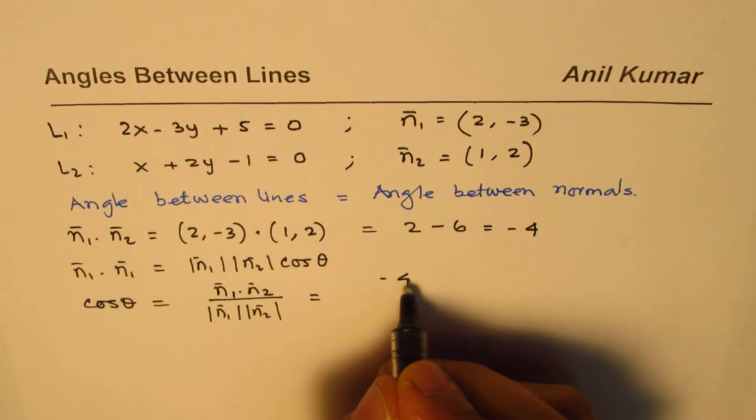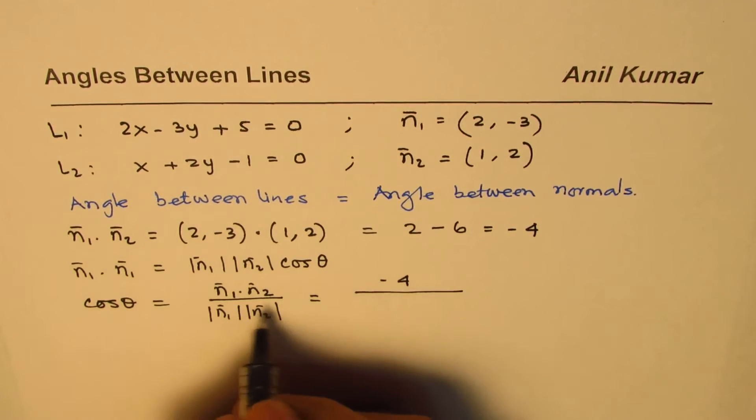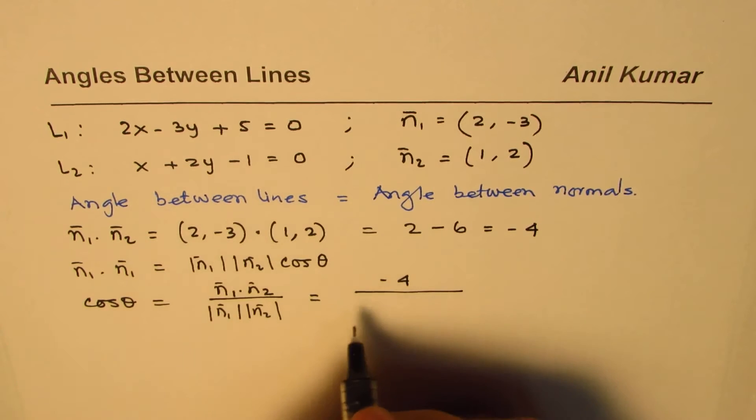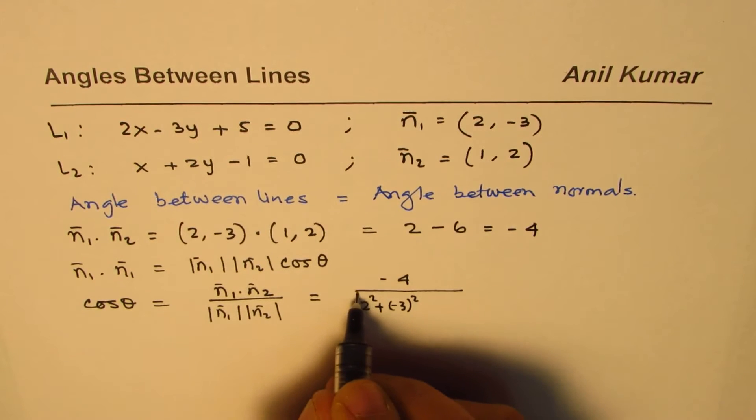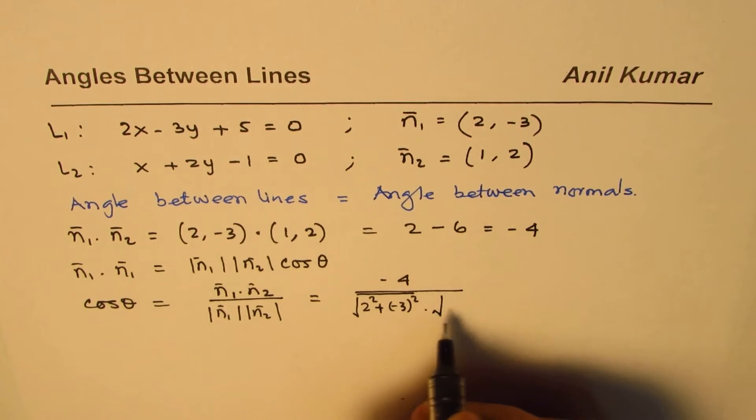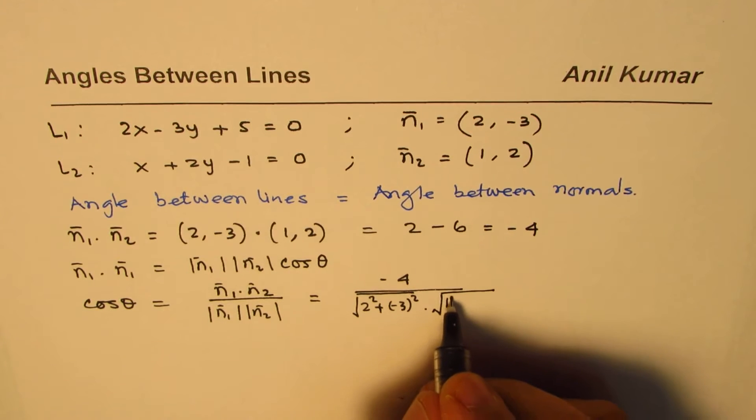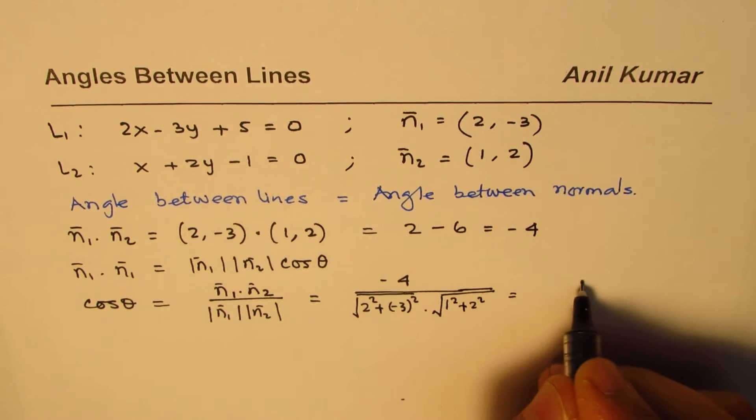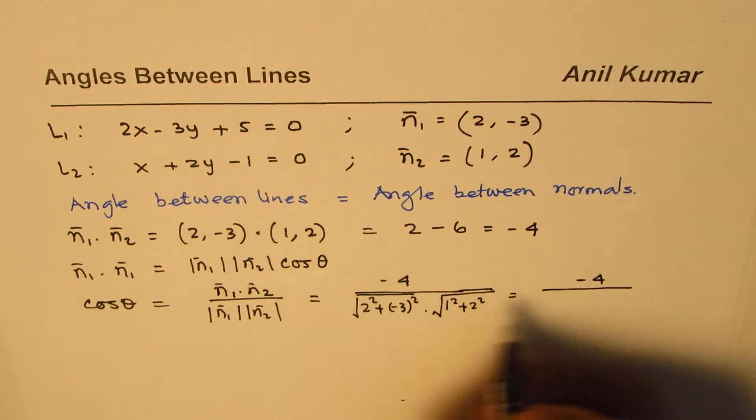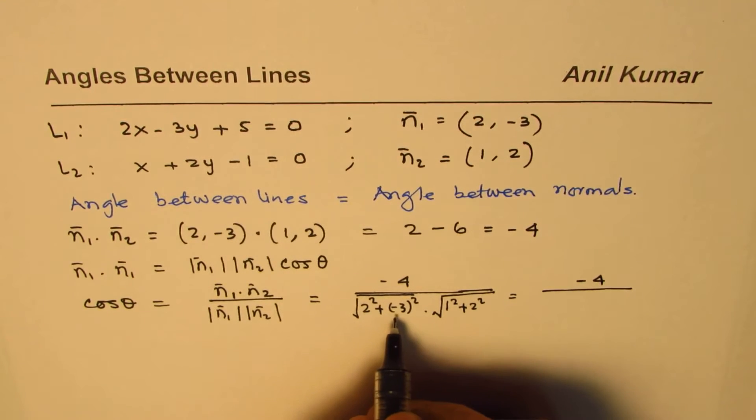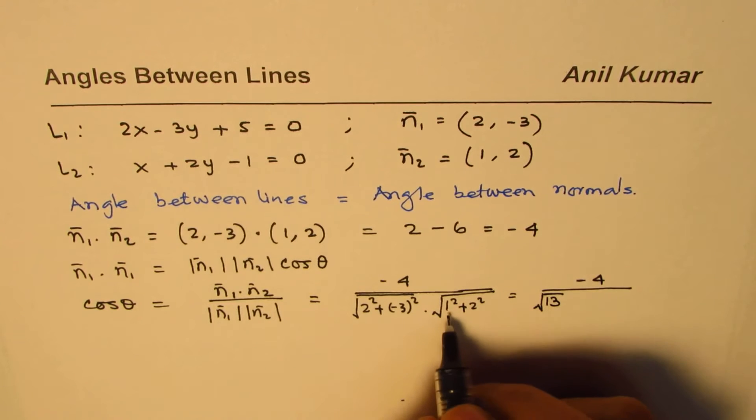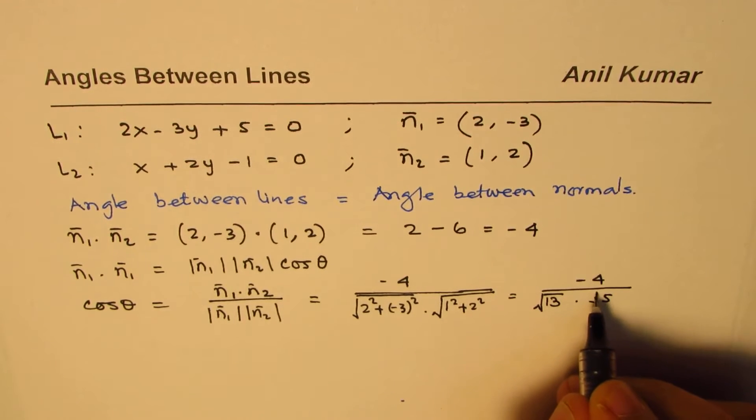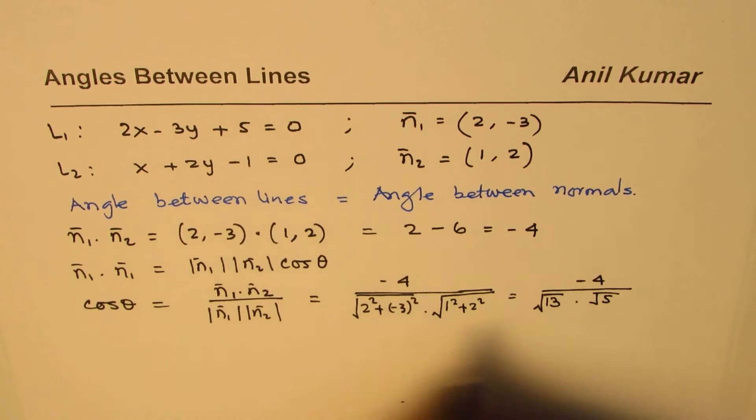Dot product is minus 4 so I am writing minus 4 on the top which is the dot product. And the magnitudes are square root of 2 square plus minus 3 square, that's the first one, times square root of 1 square plus 2 square. So which is minus 4 divided by, this is 4 and 9, 4 and 9 is 13, so square root of 4 plus 9 which is 13, and here is 1 plus 4 which is square root of 5.